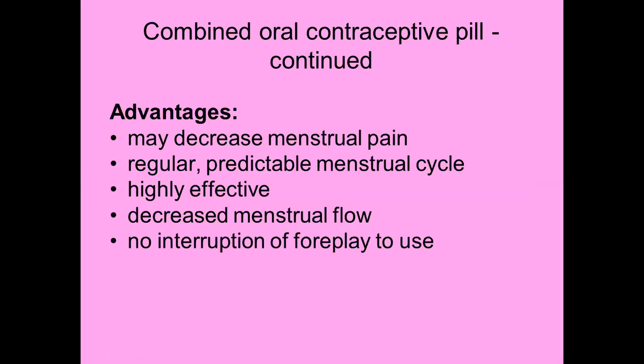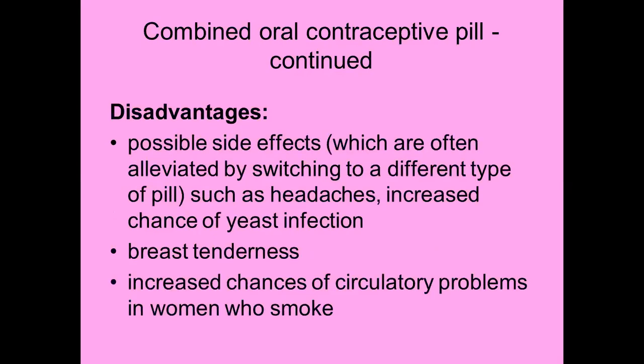Perfect use less than one, typical use five. Advantages: may decrease menstrual pain — a bonus for females who get period pains; regular predictable menstrual cycle; very effective; generally results in decreased menstrual flow — a bonus for females with heavy periods; and no interruption of foreplay.